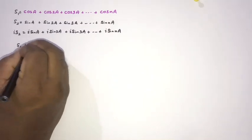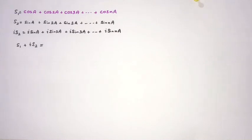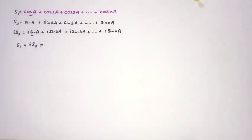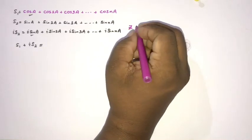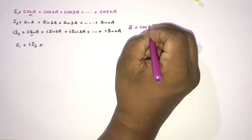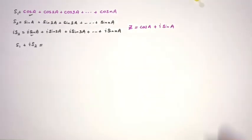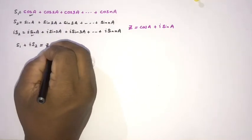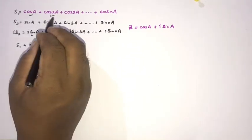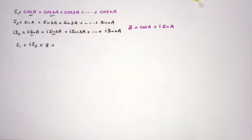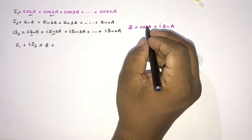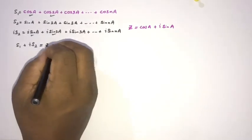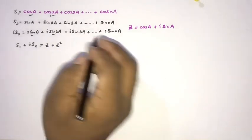S1 + i·S2: if we take the first term, we have cos(a) + i·sin(a). I am going to define a complex number c = cos(a) + i·sin(a). So the first term is c. The next term, cos(2a) + i·sin(2a), equals c² by De Moivre's theorem.